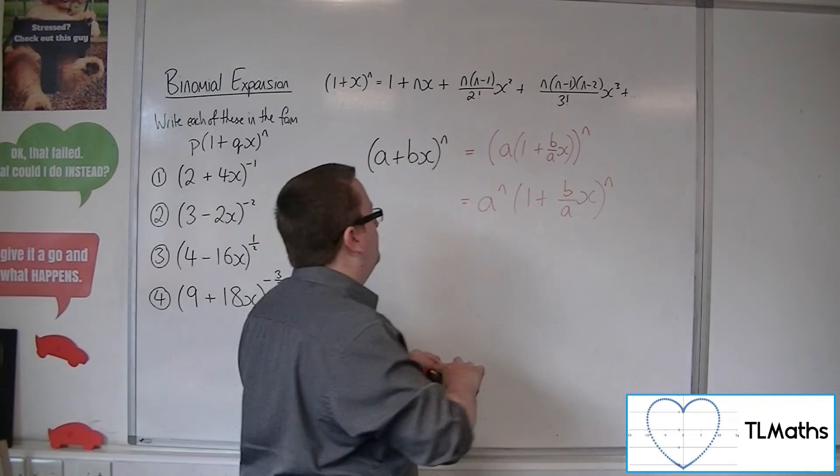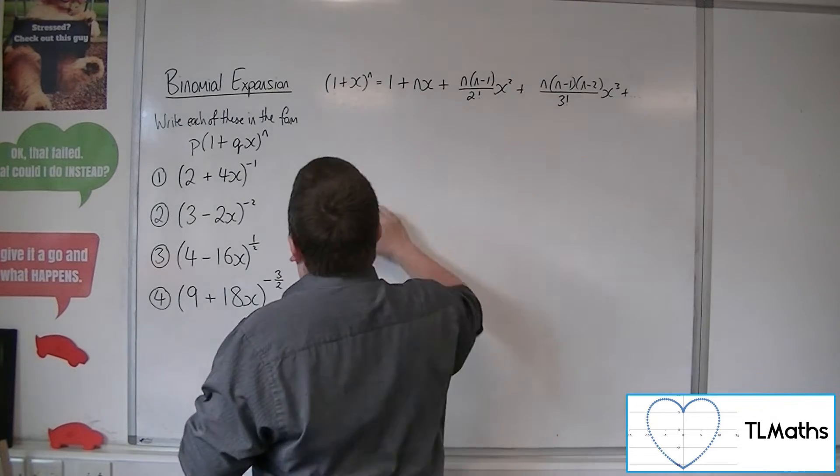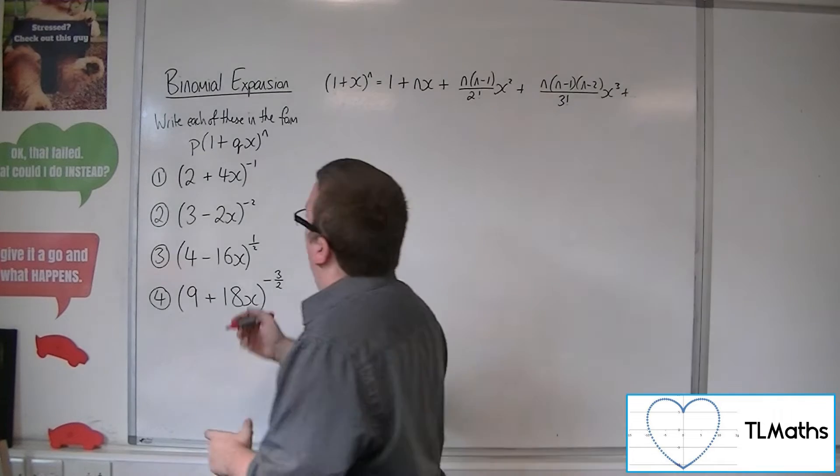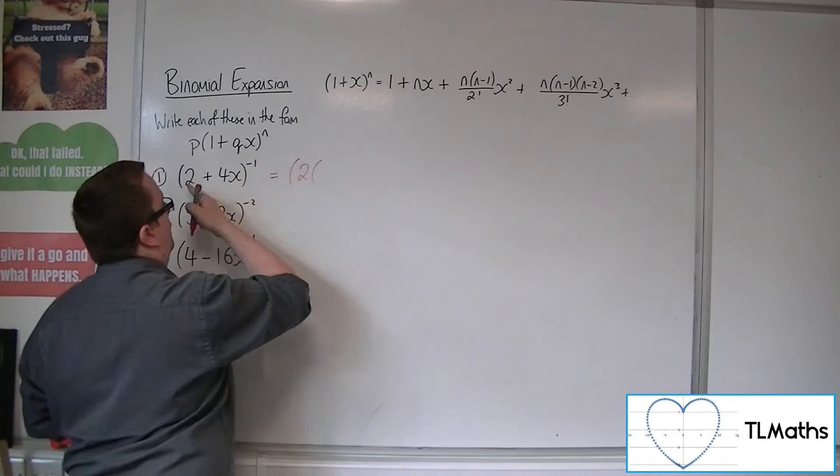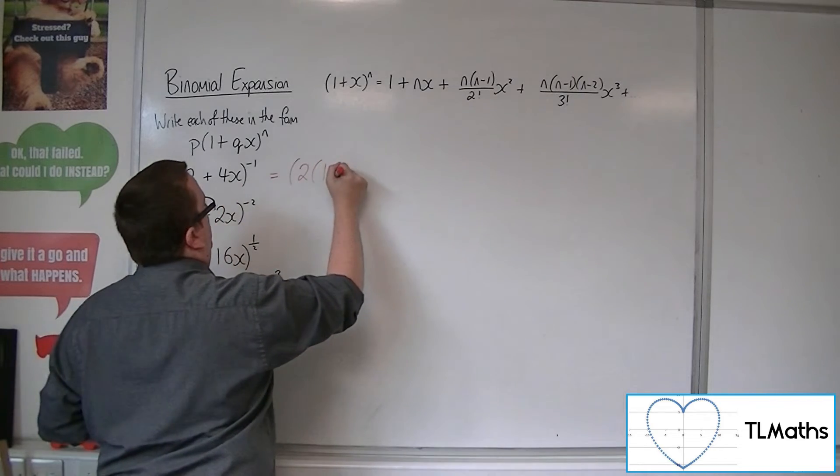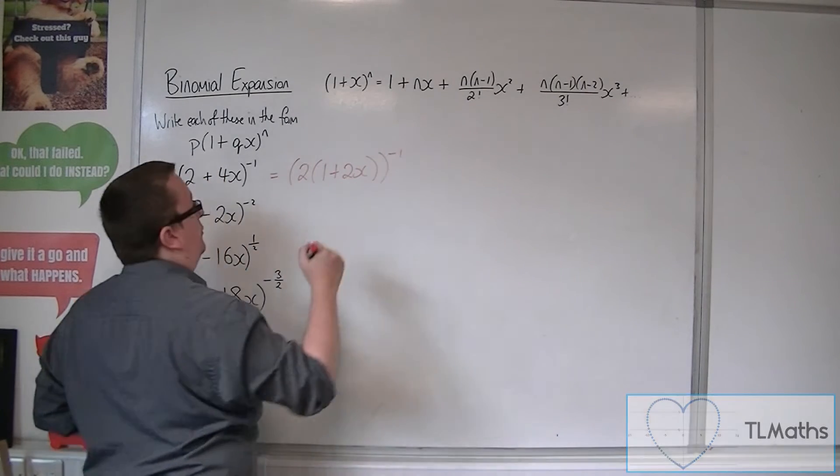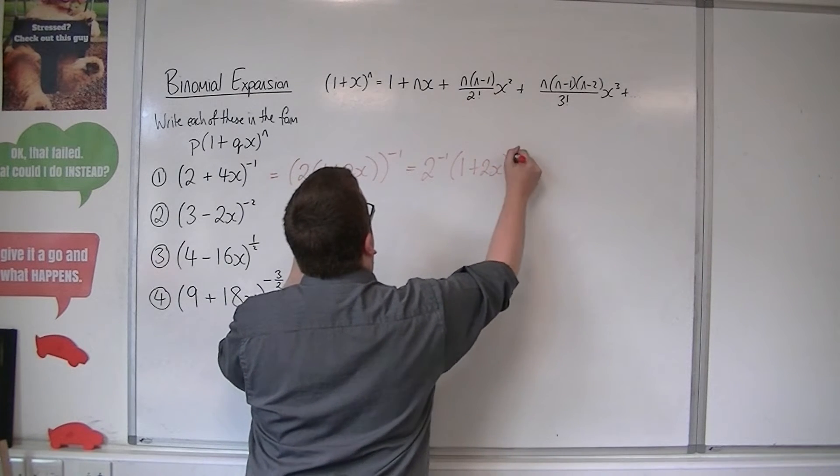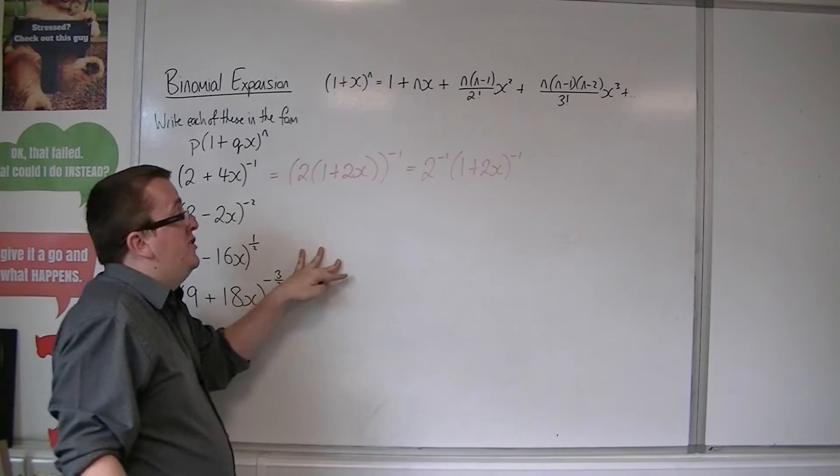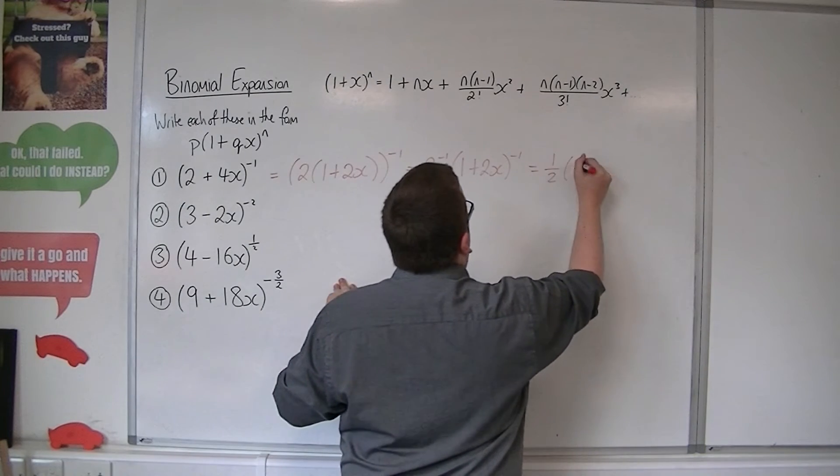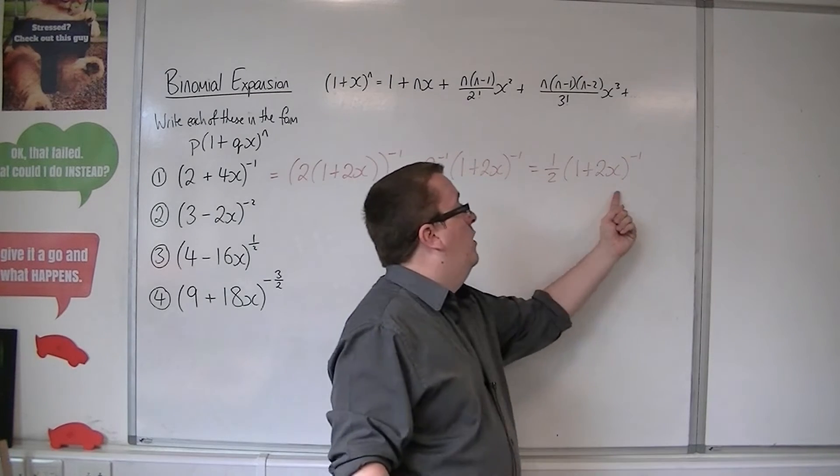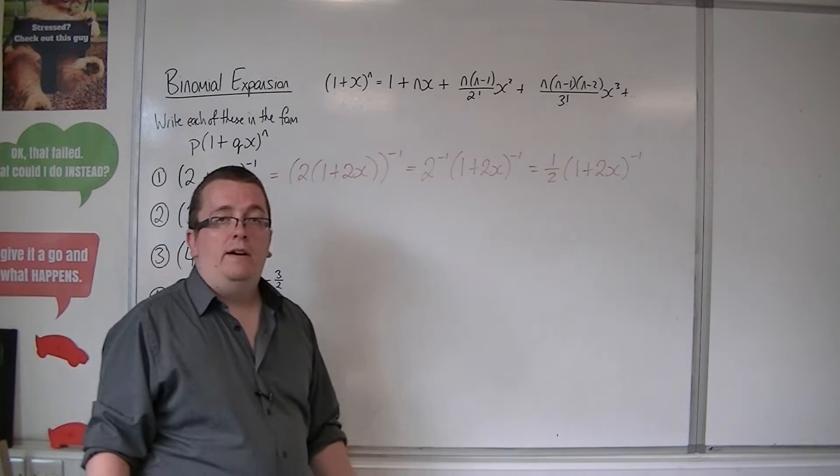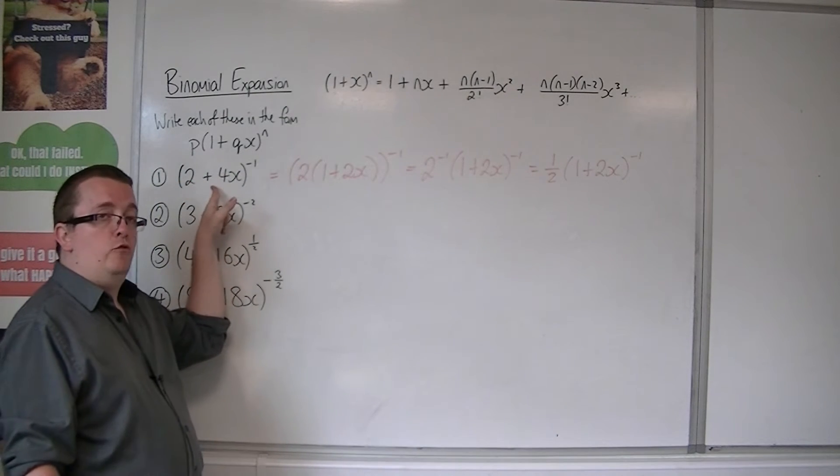So let's see this in action. So here we've got 2 plus 4x to the minus 1. So what I do is I factor the 2 out of the two terms within. So I'd have 1 plus 2x, and that's all to the minus 1. So now I've got 2 to the minus 1 times 1 plus 2x to the minus 1. And 2 to the minus 1 is just a half. So now all I need to do is work out what the expansion of 1 plus 2x to the minus 1 is, and then multiply all of the terms by a half. And I will get the binomial expansion of my original problem.